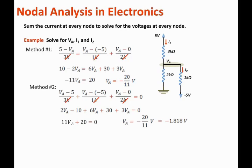Let's go back to the problem. Now, we know the resistance value and the voltages across it. Then, we can solve for the current using Ohm's law. Since I1 is flowing downward, we can state that I1 = (5 - VA)/3K. We have already solved for VA. Then, this is equal to (5 - (-1.818))/3K. That is basically equal to 2.273 milliamps.